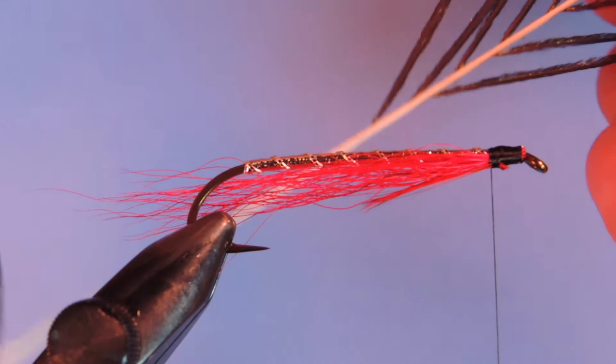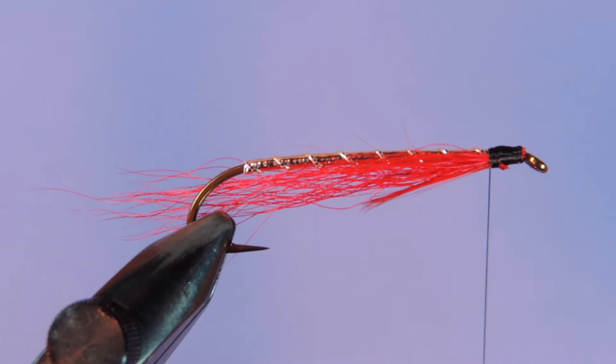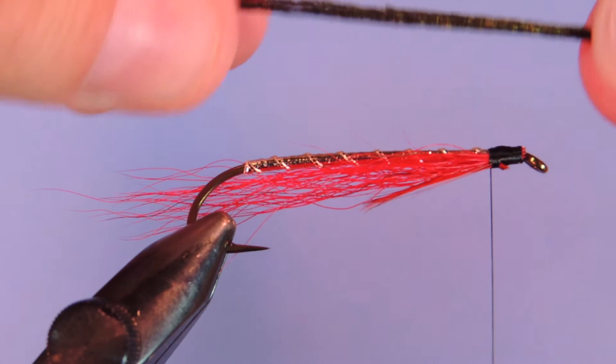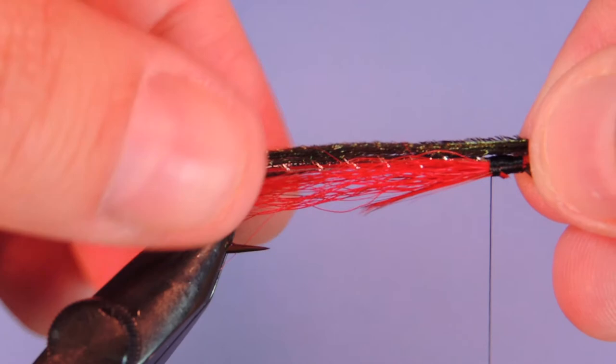Now this next step we're just going to take about four or five peacock curls. I'm just going to try and match them up to the tips. And then we're going to tie those onto the top of the hook shank. Just a hair shorter than the bucktail.